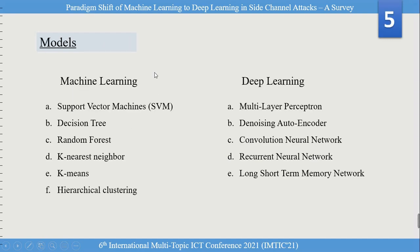The models used in machine learning include support vector machine, decision tree, random forest, k-nearest neighbors, k-means, hierarchical clustering, and many others. In deep learning, we have multilayer perceptron, denoising autoencoder, convolutional neural network, recurrent neural network, long short-term memory neural network, and others.